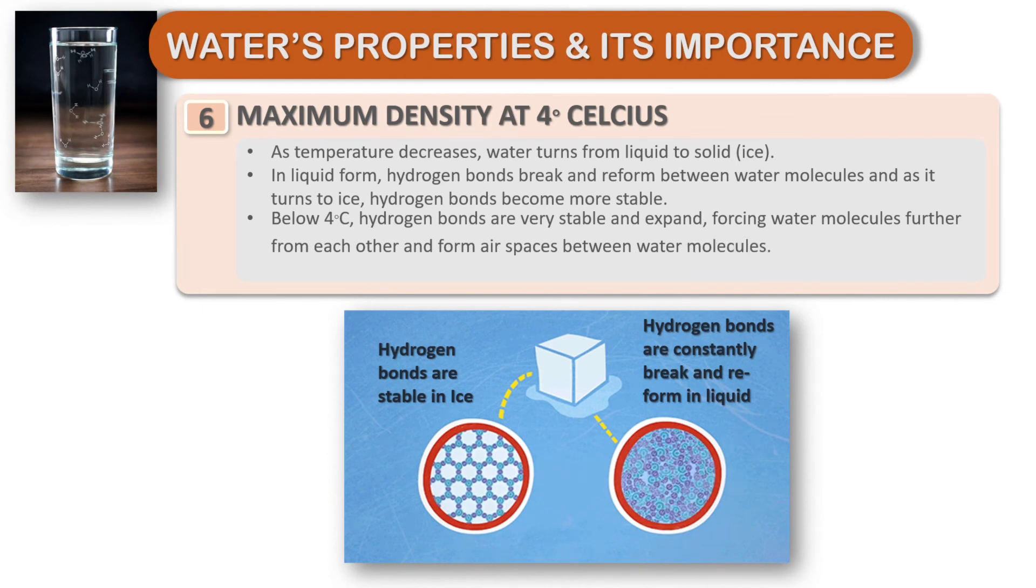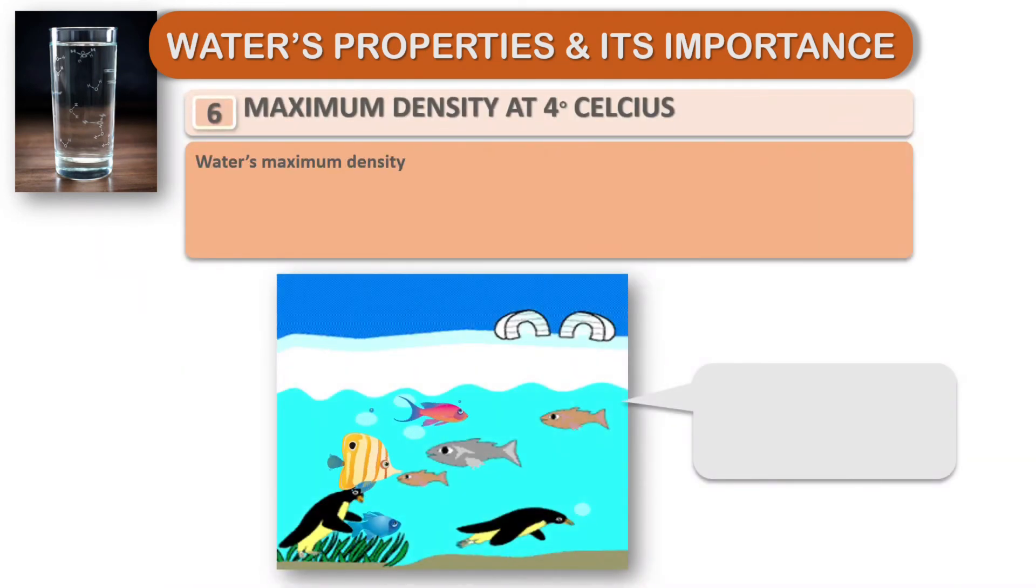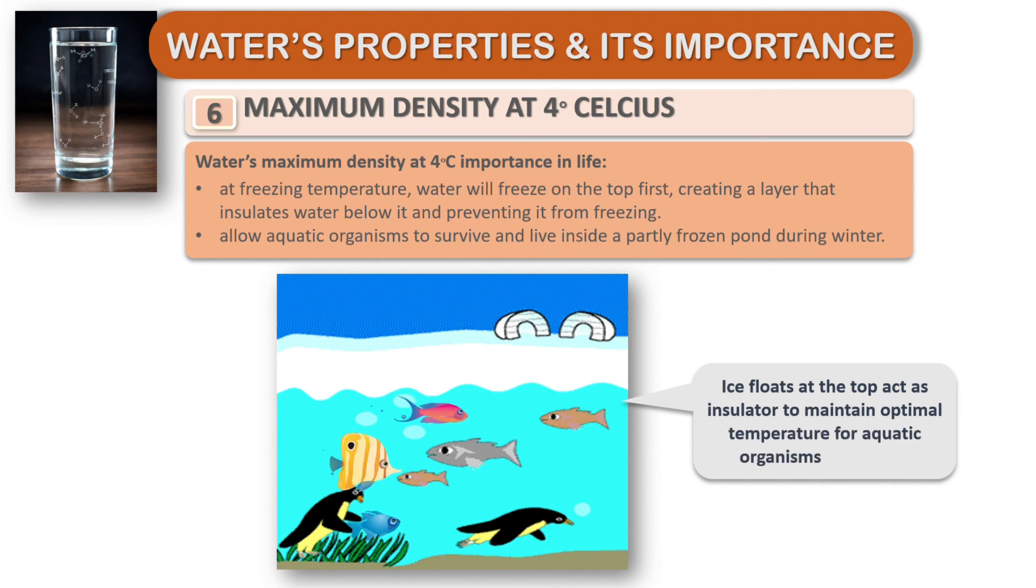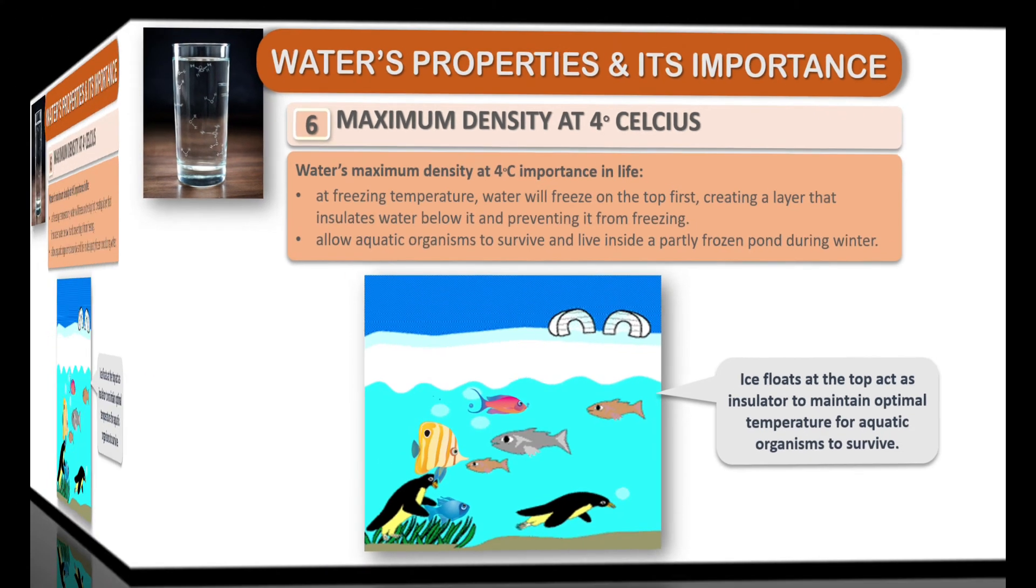This causes ice to be less dense than water and float on top of water. Water's maximum density at four degrees Celsius is important to life because at freezing temperature, water will freeze on the top first, creating a layer that insulates water below it and prevents it from freezing. This allows aquatic organisms to survive and live inside a partly frozen pond during winter. Ice floating at the top acts as insulation to maintain optimal temperature for aquatic organisms to survive.